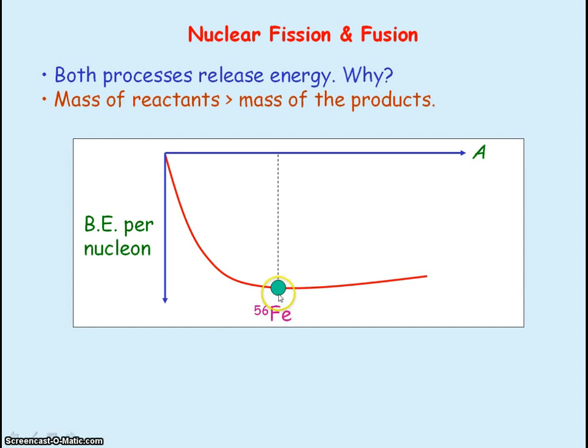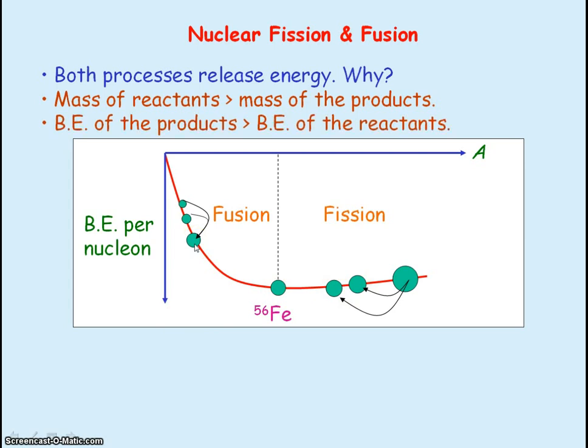Iron 56 has the maximum binding energy per nucleon and fission occurs for nuclei that are above iron 56. That's because in both these processes you can see that the binding energy of the product is greater than the binding energy of the reactants and as a result net energy is released in both these processes.